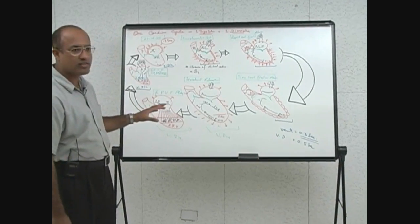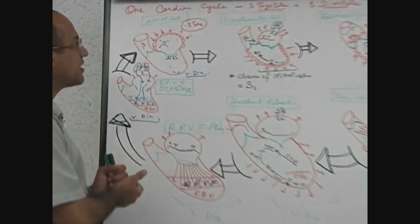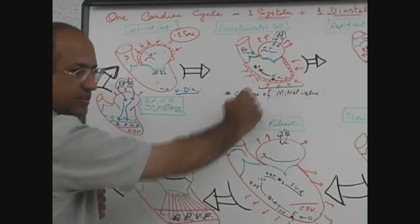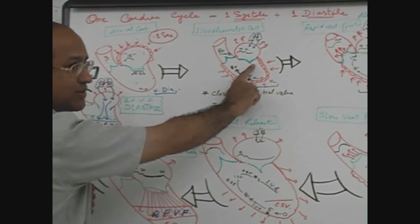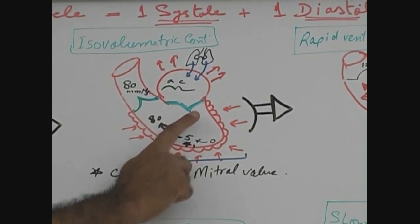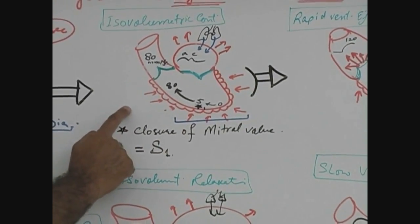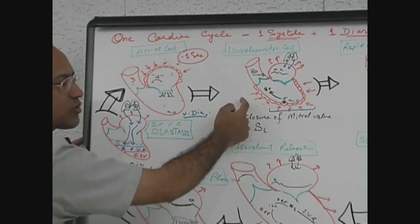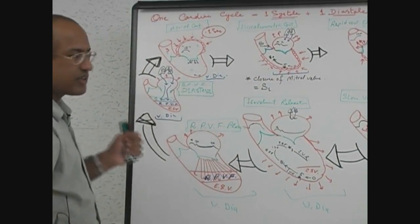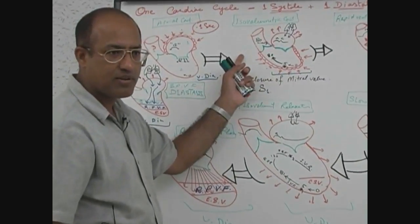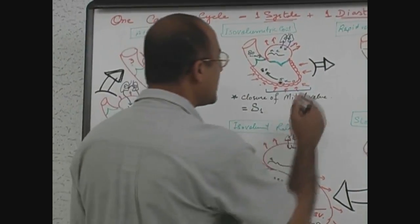Now we will incorporate the concept of heart sounds with the different phases of the cardiac cycle. The first most important event is when the left ventricle contracts: with the onset of ventricular contraction, the mitral valve closes on the left side and the tricuspid valve closes on the right side. The closure of both the mitral and tricuspid valves at the onset of ventricular systole produces the first heart sound.